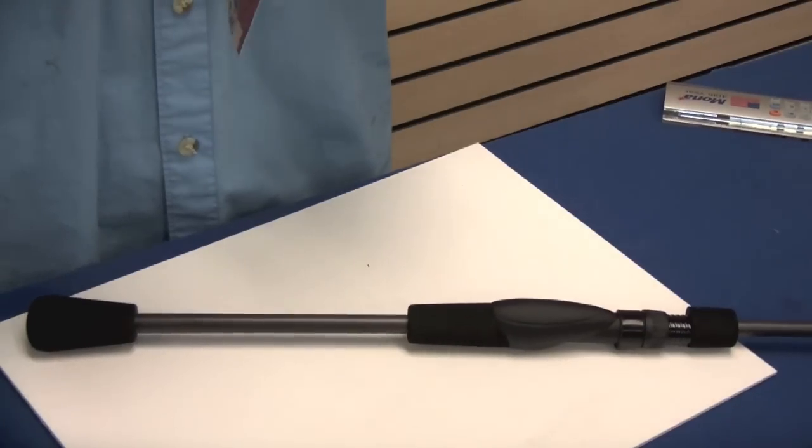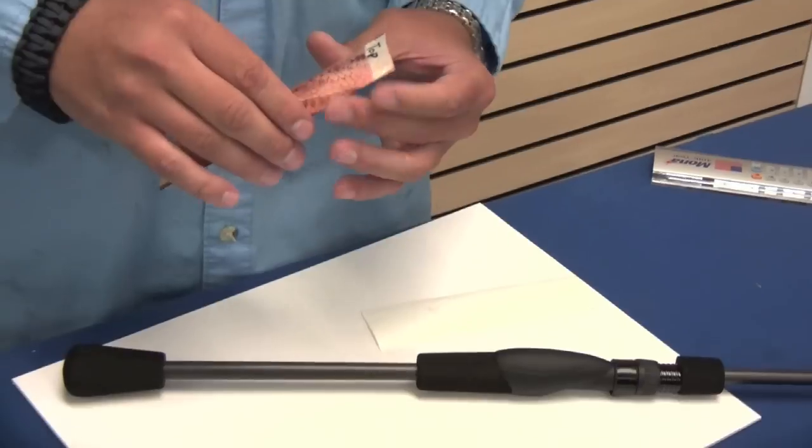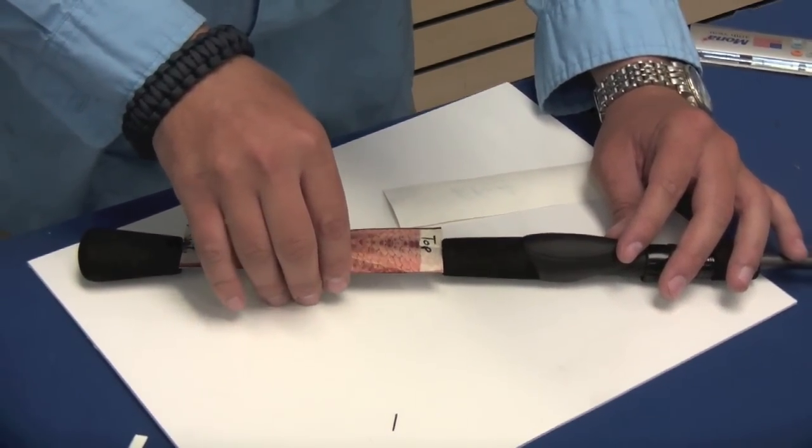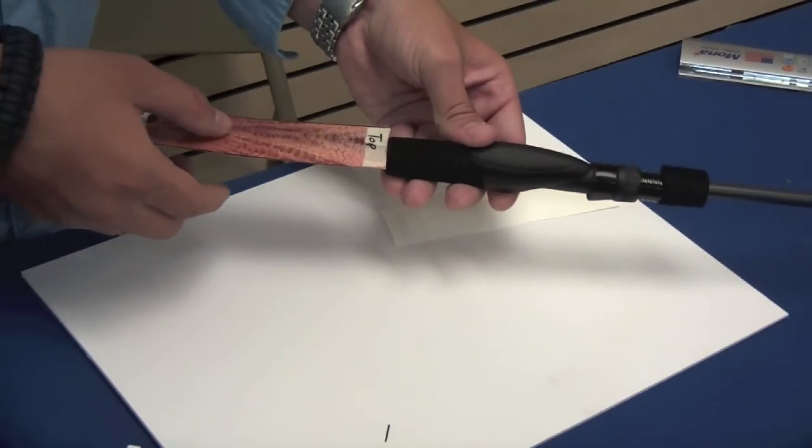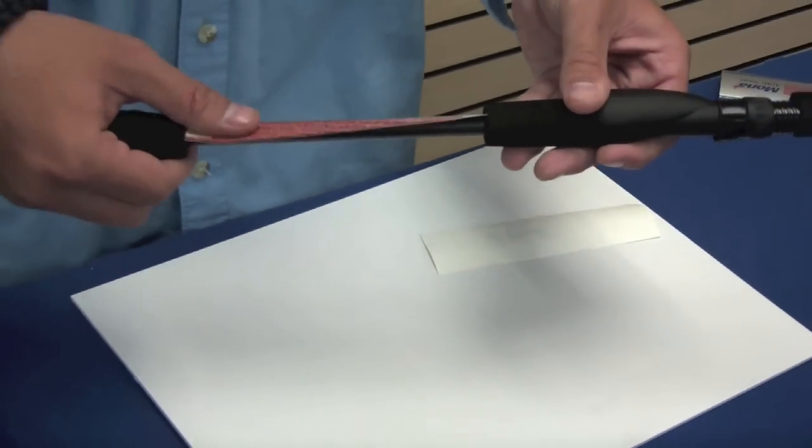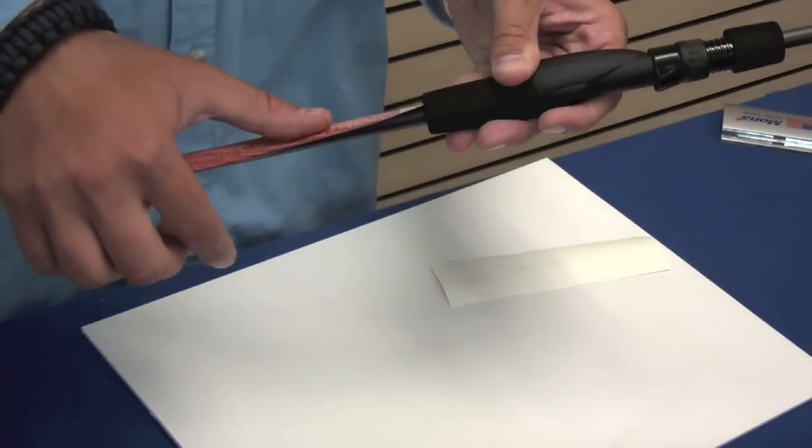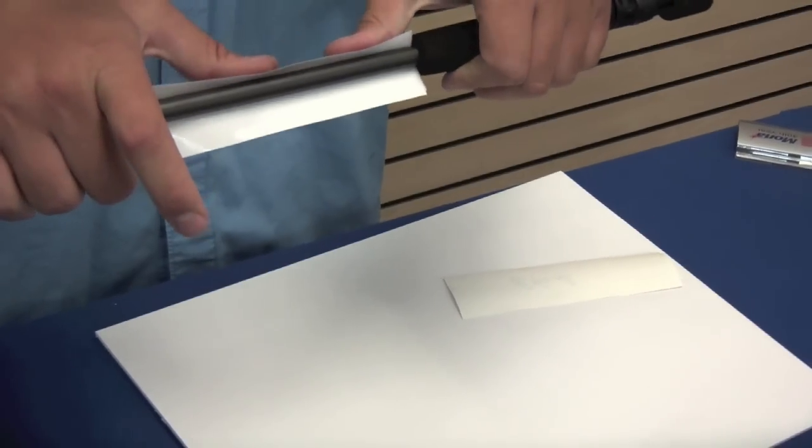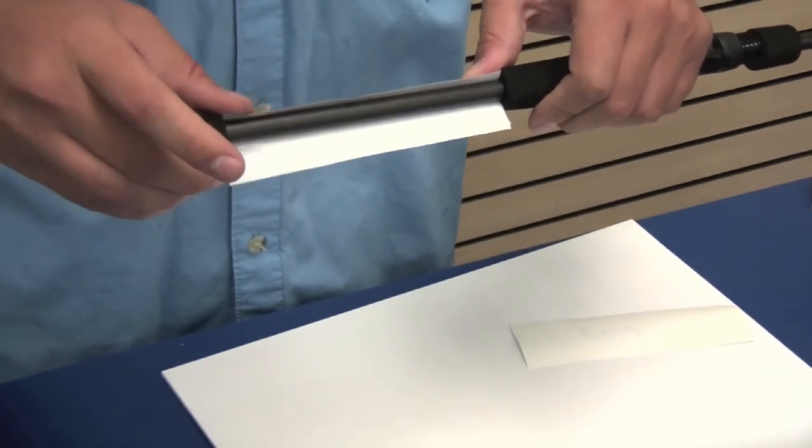We're going to peel off the adhesive backing and center it up to the middle of the reel seat. Once we have it all laid out and centered up, we're going to take it and just run our finger up the middle and then slowly work out one side of it. Make this a nice and slow process, avoiding all bubbles.